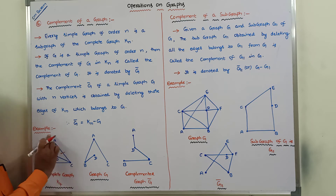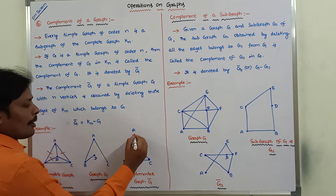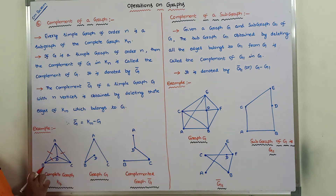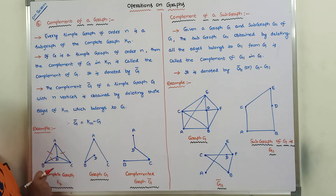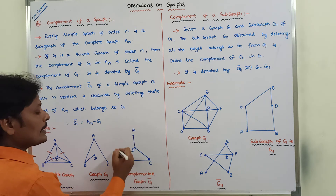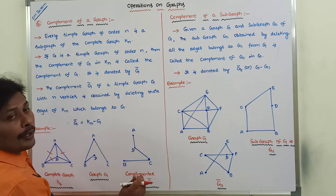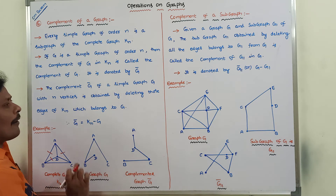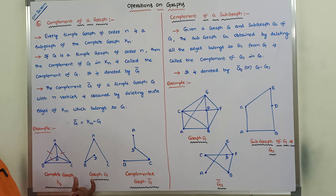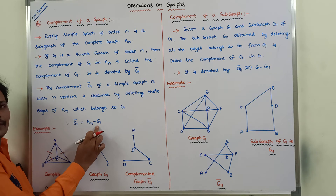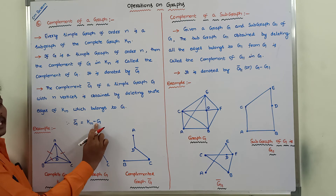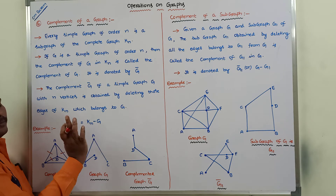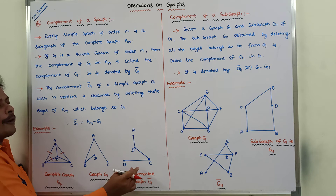The remaining edges present in K4 are: AD, DC, and BC. Whatever graph we obtain from these remaining edges is called the complemented graph of G, denoted G-bar. So G-bar can be written as Kn minus G — whatever edges are present in G are removed from complete graph Kn — and then we get the complemented graph G-bar.